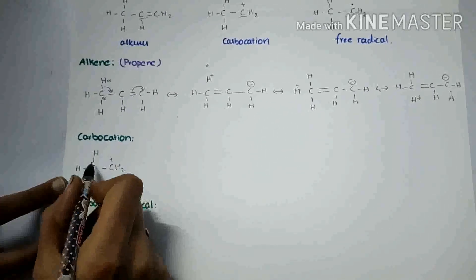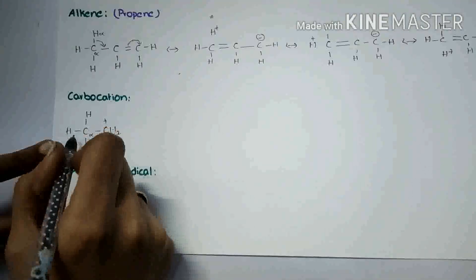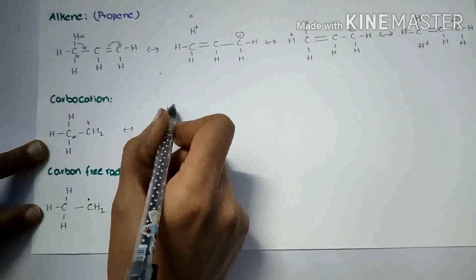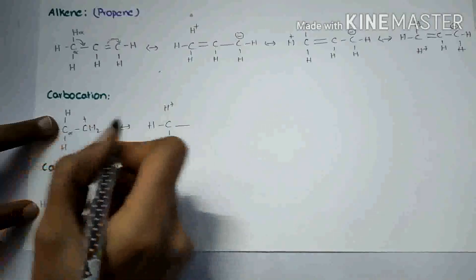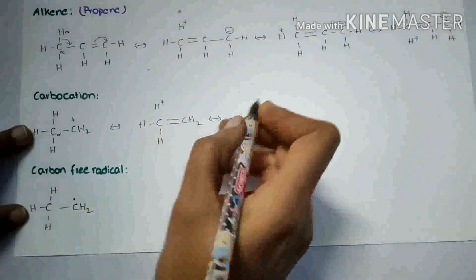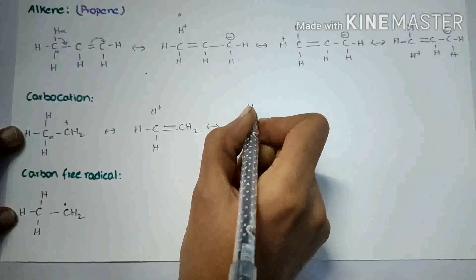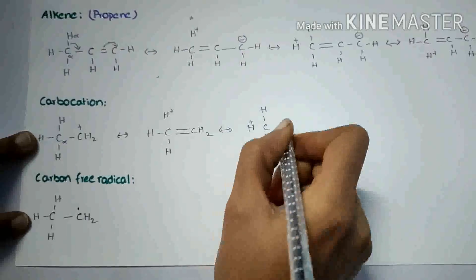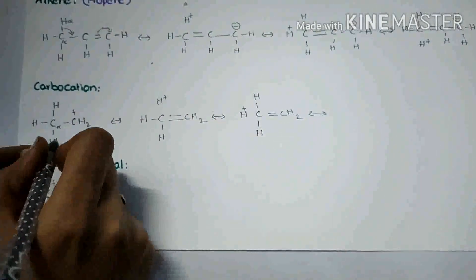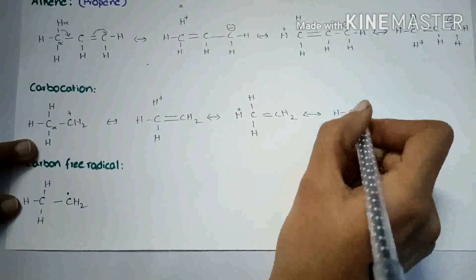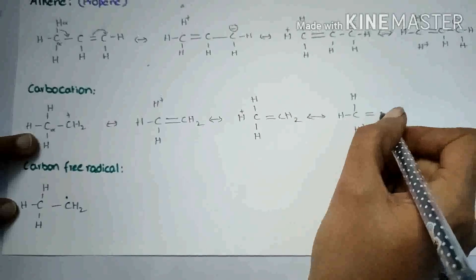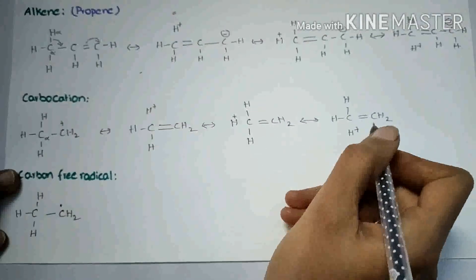In carbocation, there are three alpha hydrogens on the alpha carbon. When each hydrogen is involved in delocalization, the electrons shift to the carbocation carbon, the positive charge moves to that hydrogen, and a pi bond forms. Each of the three alpha hydrogens gives one hyperconjugative structure, making a total of four structures.